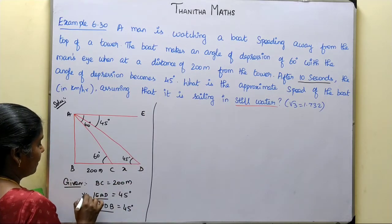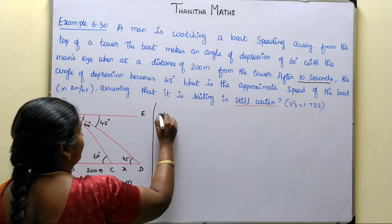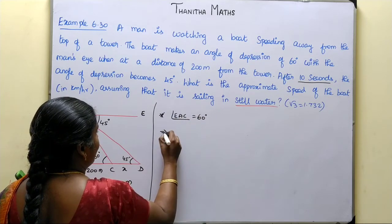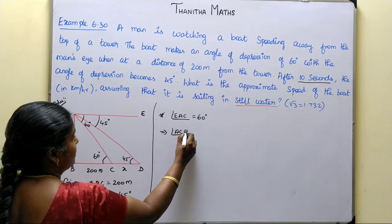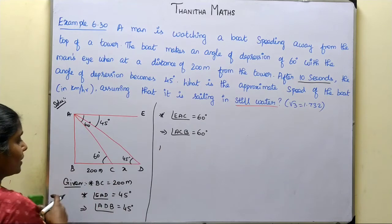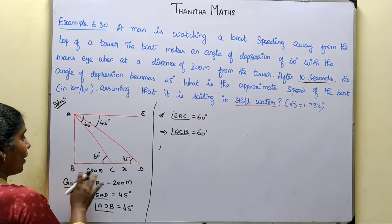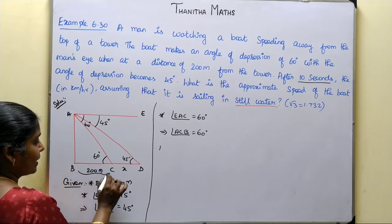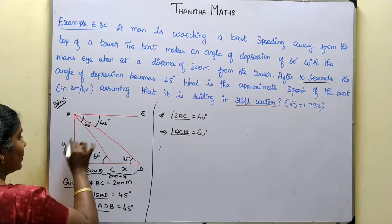Angle EAC equals 60 degrees, which implies angle ACB equals 60 degrees. Now, let the unknown distance traveled be x, so BC equals 200 and BD equals 200 plus x. The height of the tower is y. We have triangle with opposite side y and adjacent side 200, and another with adjacent side 200 plus x.